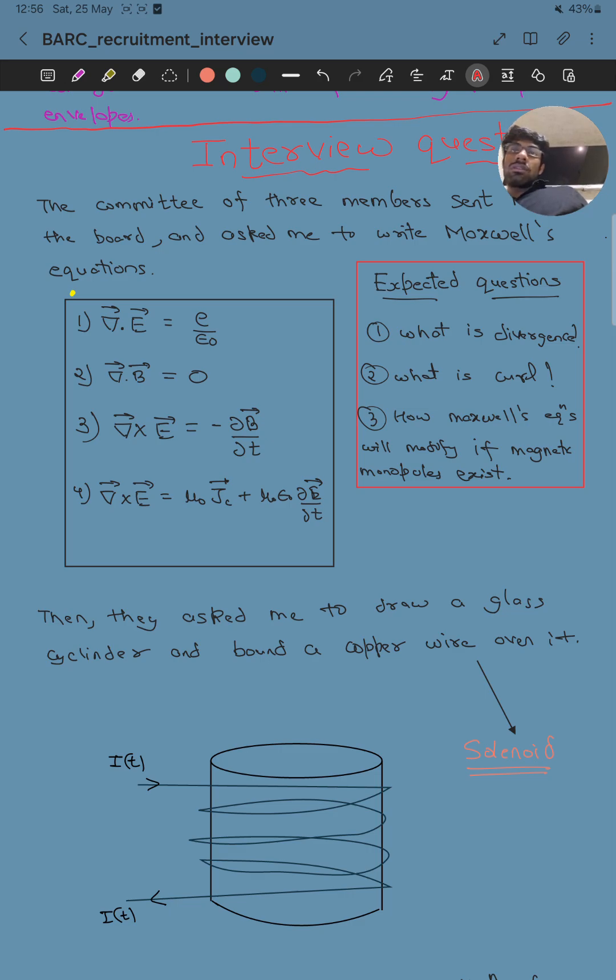Some expected questions they can ask from you, which were not asked from me: What is divergence? What is curl? How would Maxwell's equations modify if magnetic monopoles exist? You can look for the answers to these questions.